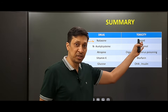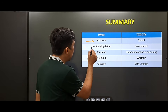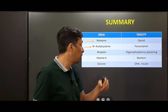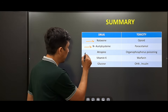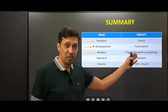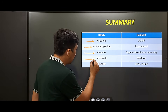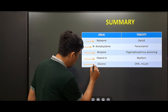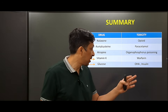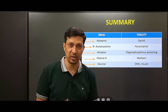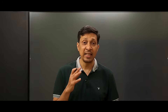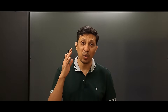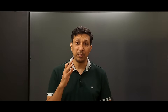In summary: naloxone is the antidote for opioid toxicity; N-acetylcysteine for paracetamol overdose; atropine for organophosphorus poisoning; Vitamin K for warfarin toxicity; and glucose for hypoglycemia caused by oral hypoglycemic agents or insulin. These antidotes are not rare — they are common and life-saving. You have to know them well and keep them at your fingertips, especially if working in the ER, ICU, or rural setups.